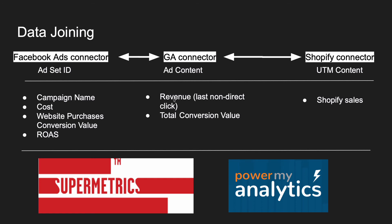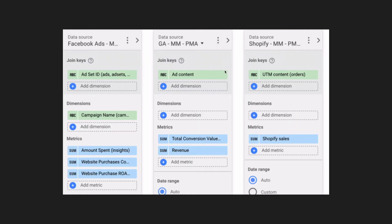From Google Analytics we will pull revenue data for last known direct click plus total conversion value for assisting conversions. From Shopify we will pull Shopify sales data. In order to pull this data we need to use paid connectors from SuperMetrics or PowerMyAnalytics to pull all these fields. The next slide shows how it is joined in Google Data Studio.